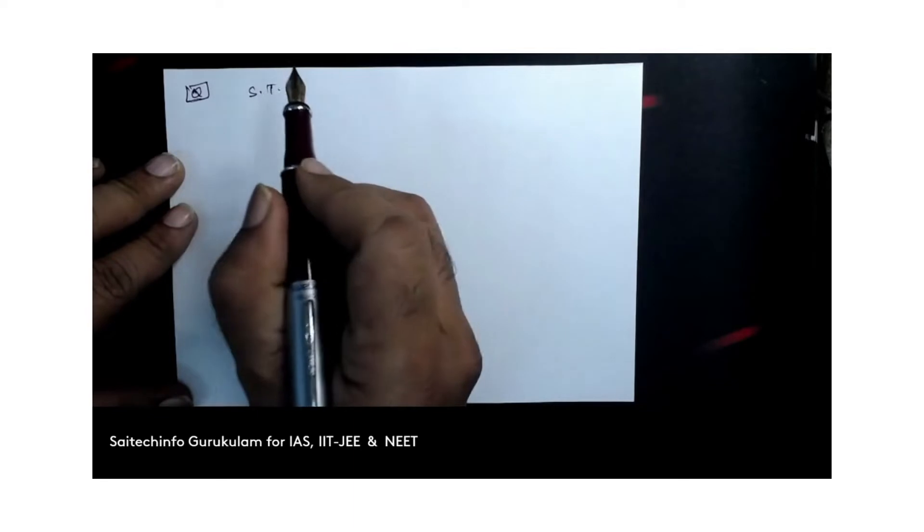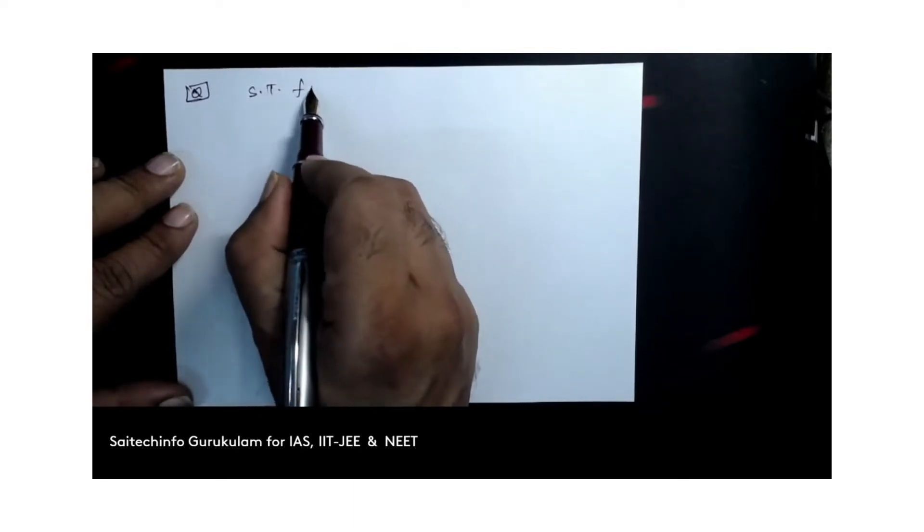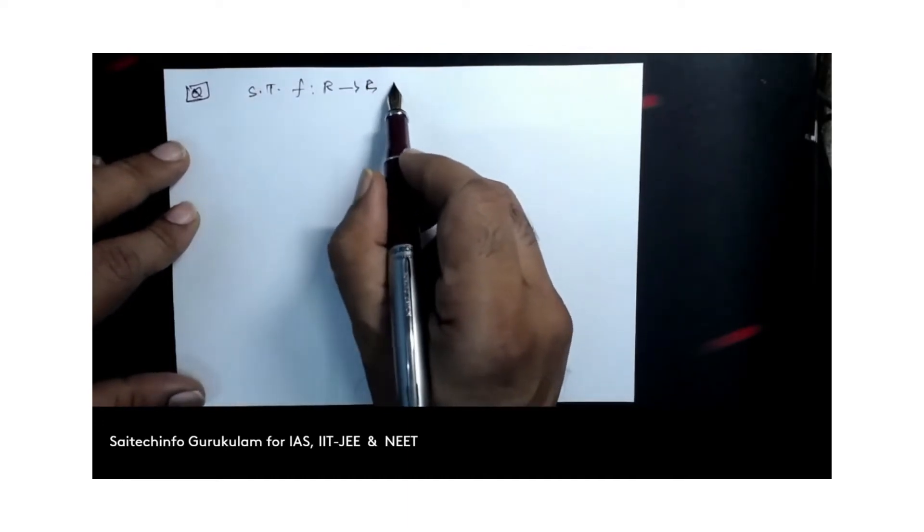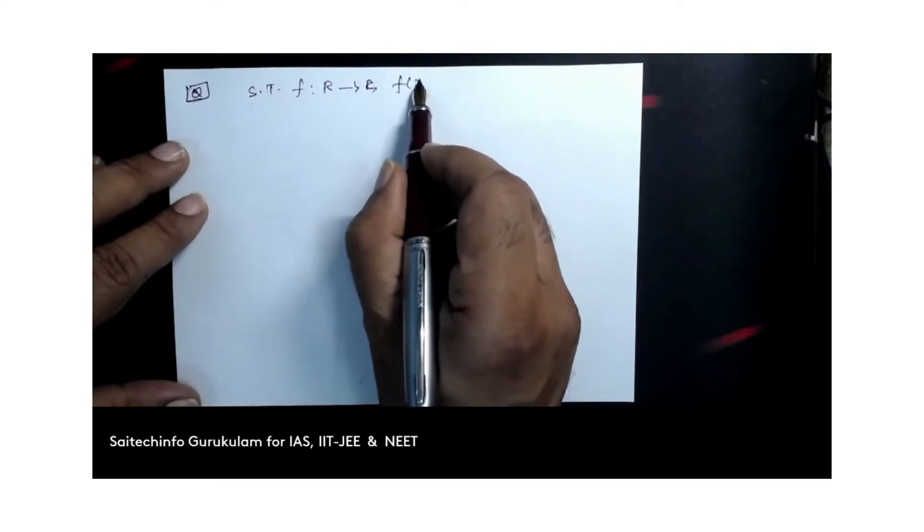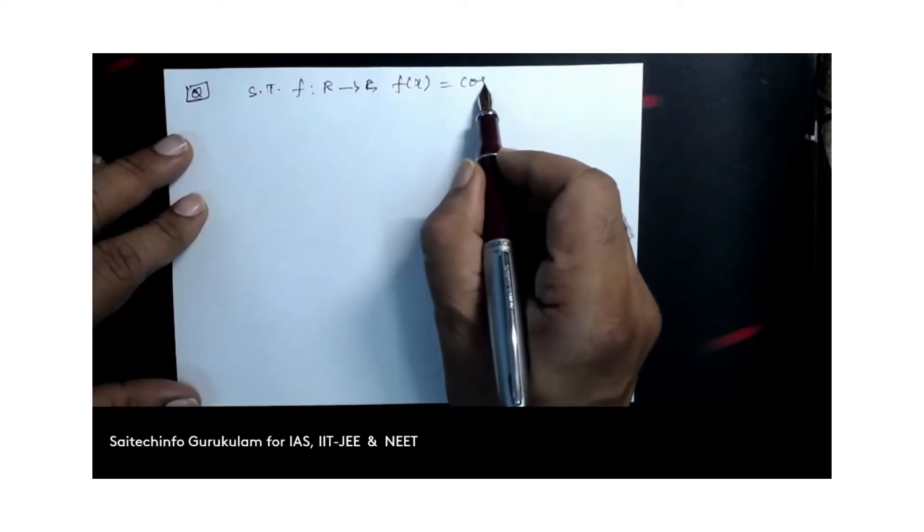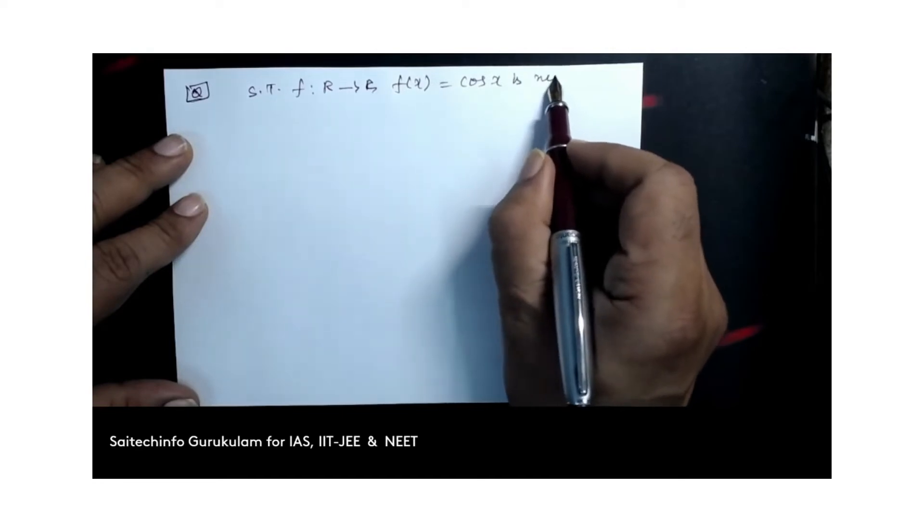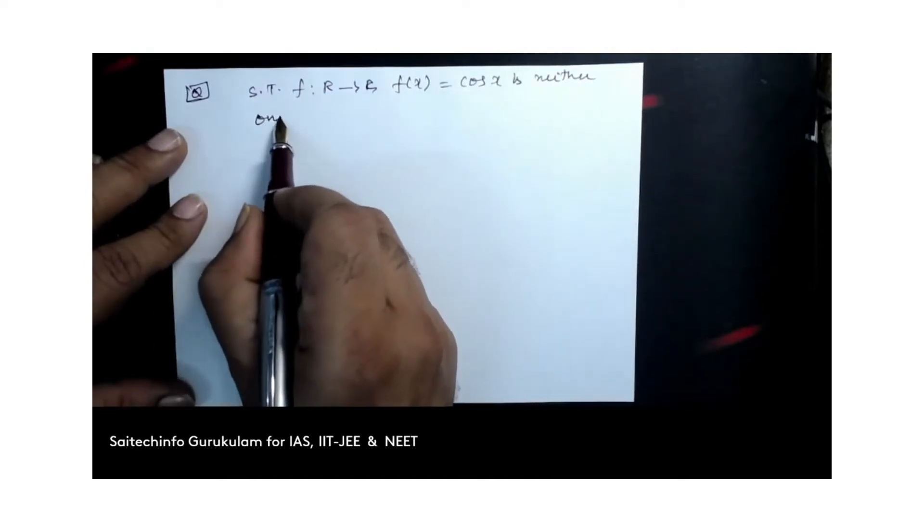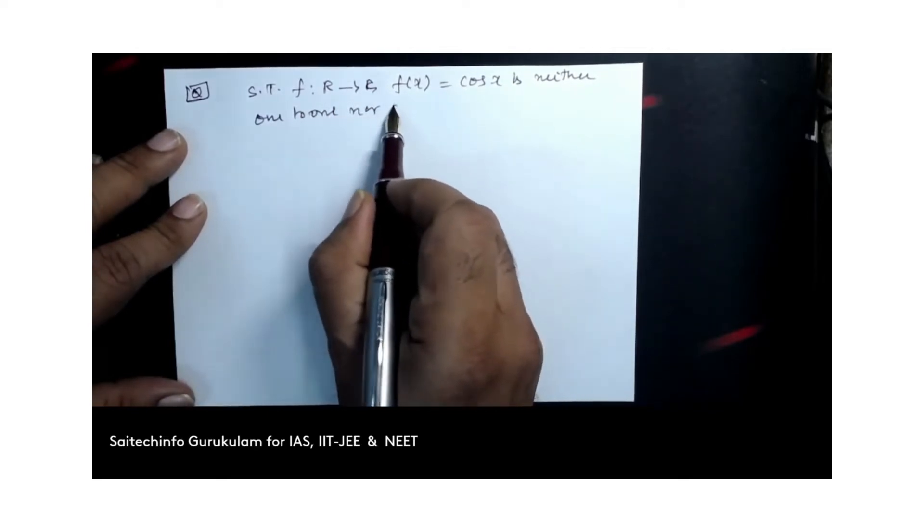First, let us write down the given points. So the function is related as cos x, f of x equals cos x.